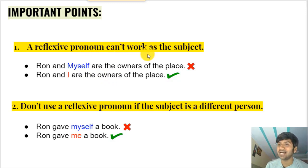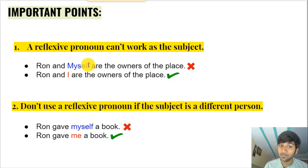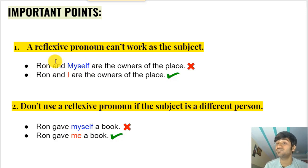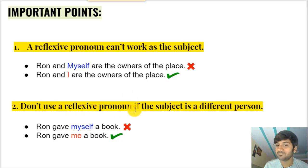Some important points. First: a reflexive pronoun cannot work as the subject of a sentence. It can only work as an object of a verb or an object of a preposition. So saying 'Ron and myself are the owners of this place' is wrong — 'myself' cannot be part of a compound subject. You must use a subjective pronoun: 'Ron and I are the owners of this place.'